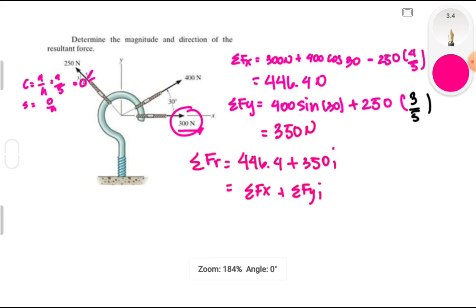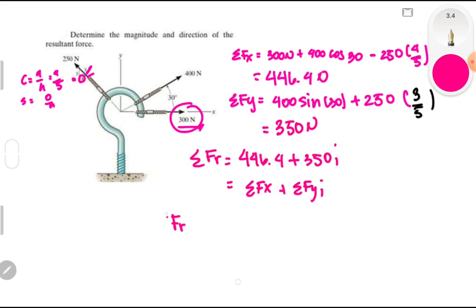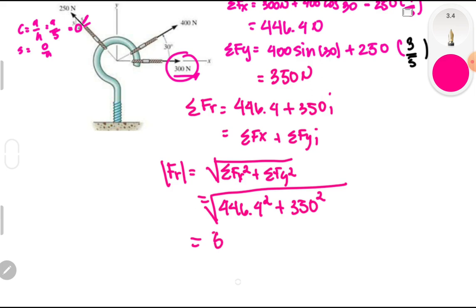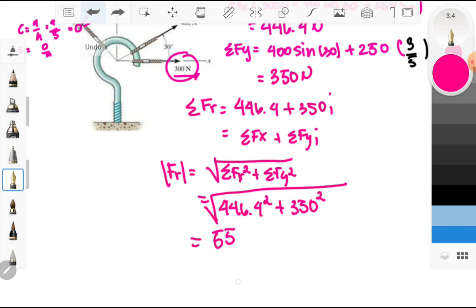Solving for the magnitude of the resultant force: FR = √(ΣFx² + ΣFy²) = √(446.4² + 350²). Taking the square root gives a value of approximately 566 to 567.25 Newtons. That is our FR magnitude.